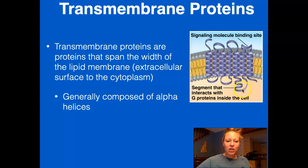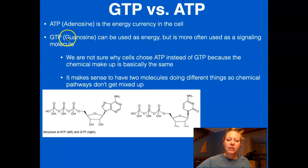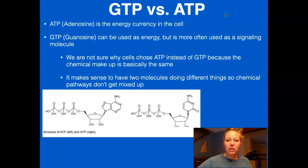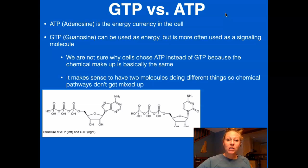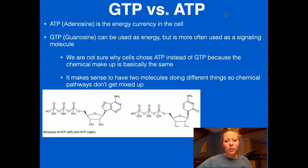These transmembrane proteins are generally composed of alpha helices because they have to span the whole length of the membrane. The next concept is the difference between GTP and ATP, which is not very much. GTP and ATP are very similar — the difference is that GTP has a guanosine and ATP has an adenosine. The difference comes from what they do in the cell: ATP tends to be used for energy, whereas GTP tends to be used for communication and signaling.